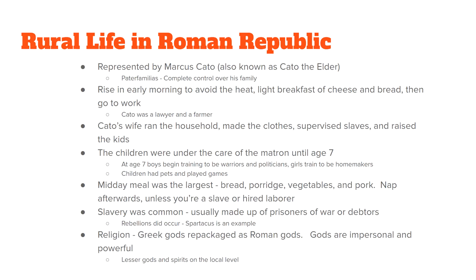To deal with important family decisions, Marcus Cato would call a counsel of the adult males in the family, give them a chance to give their point of view, and then decide from that what he would do. Women had no formal part in the family, but probably were able to say their piece as well. Cato was a lawyer and a farmer, and he knew how to use the money he had wisely.